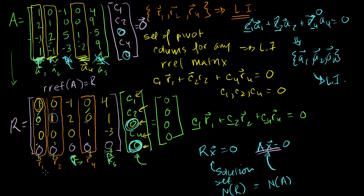So we're halfway there. We've shown that because the pivot columns in RREF are linearly independent, and the null space is preserved, the corresponding columns in the original matrix A are also linearly independent. The next video will show that these three vectors also span the column space — and together, those two facts prove they form a basis.